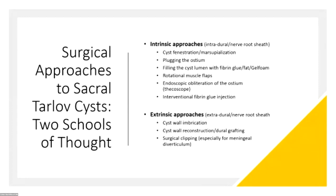You can broadly classify these approaches into intrinsic and extrinsic. Intrinsic approaches are where you're actually into the perineural space — that space contiguous with the arachnoid — trying to find the ostium and plug it, possibly doing a rotational muscle flap. This would also include interventional fibrin glue injections, where your goal is to seal off whatever is leaking into the cyst. An extrinsic approach is where you're closing the wall through imbrication — that's folding it together — or doing a dural graft to reconstruct it. If the cysts are caused by a connective tissue problem where the nerve root sheath is giving way, then reinforcing the nerve root sheath rationally makes sense.